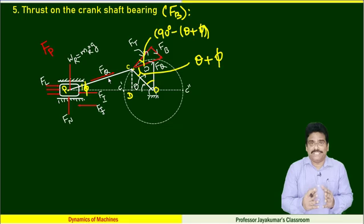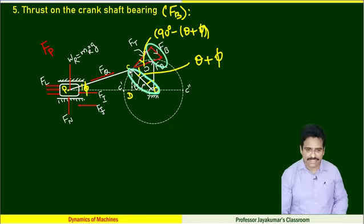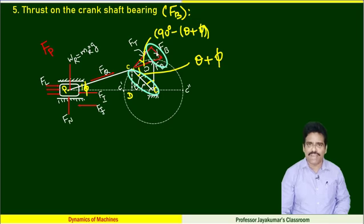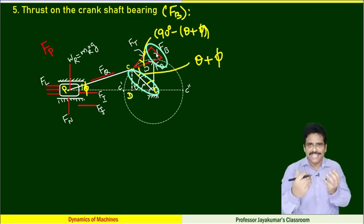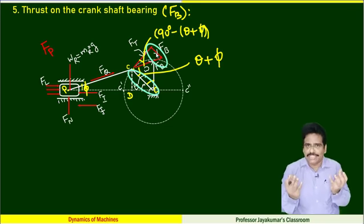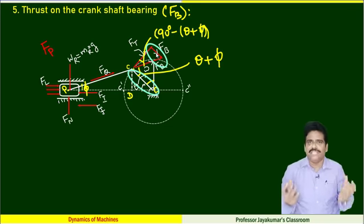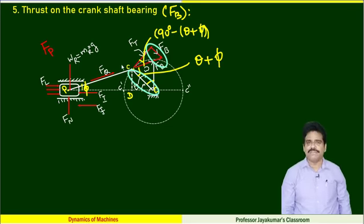The next component is thrust acting on the crankshaft bearing. The arrow mark shows it is acting towards the crank — that force acts on the crankshaft bearing. How can I find it? We can get it from the same right-angle triangle.